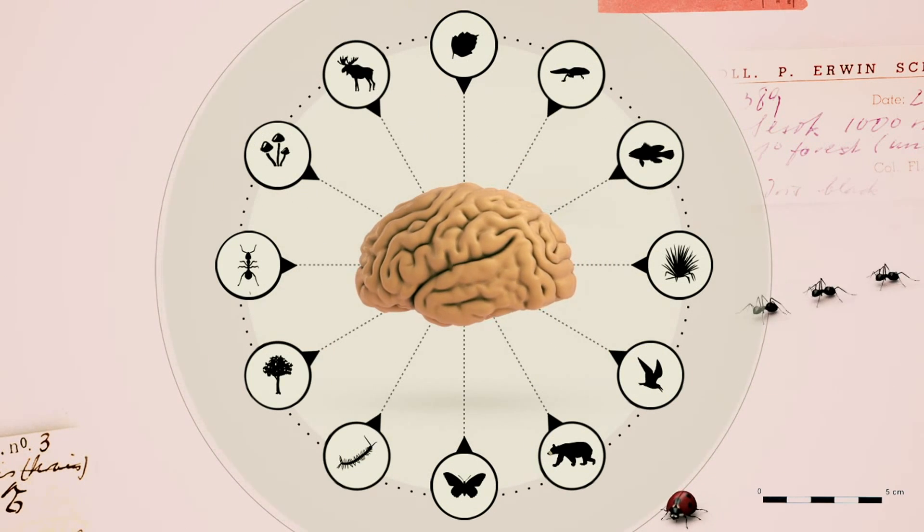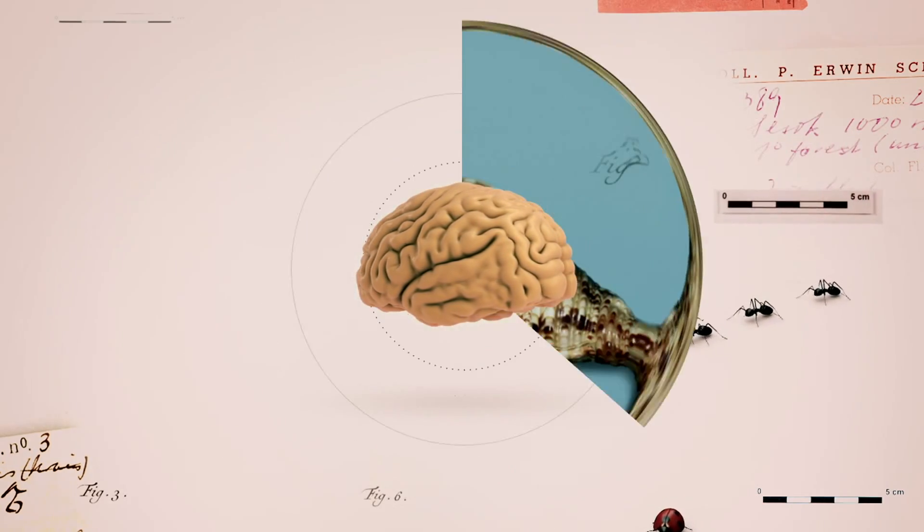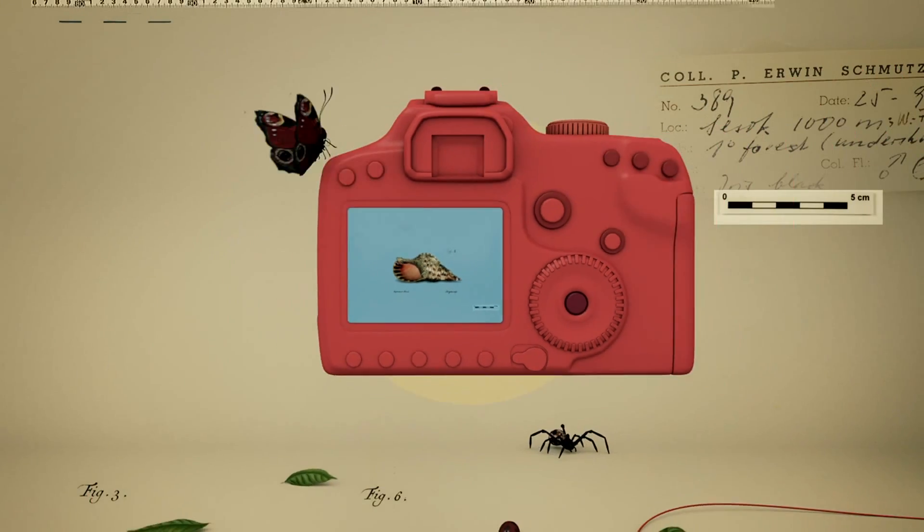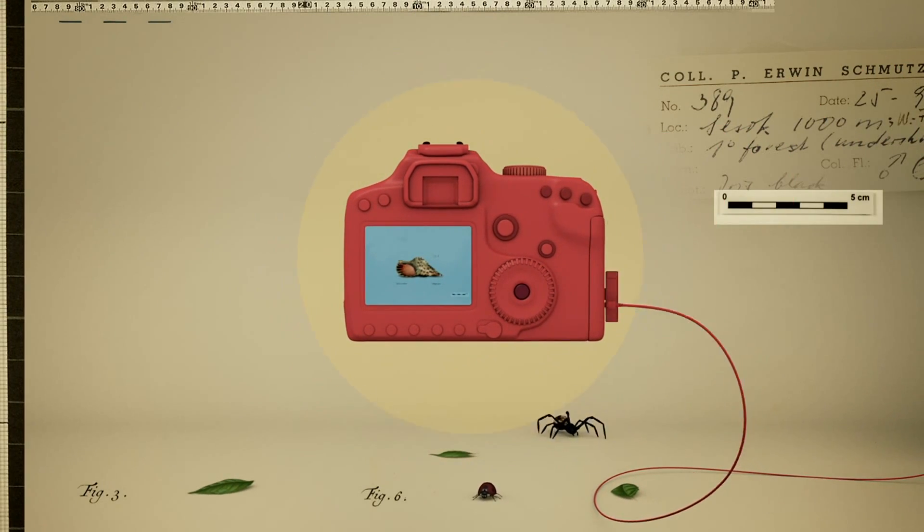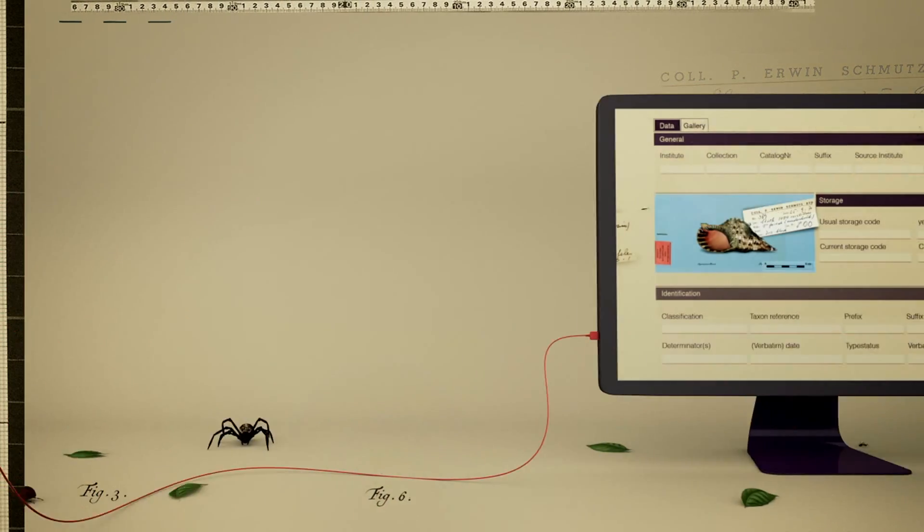Naturalis Biodiversity Centre is the Dutch centre of excellence for biodiversity studies. All the data obtained from research is currently being digitised.